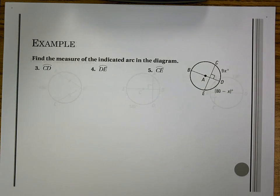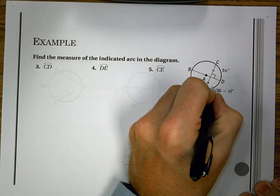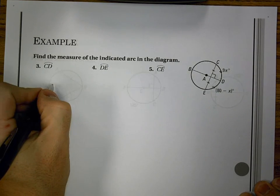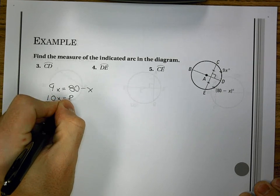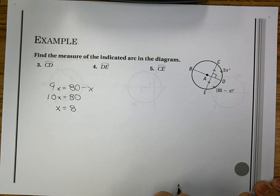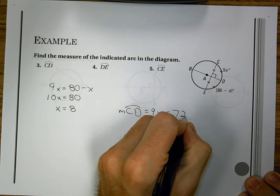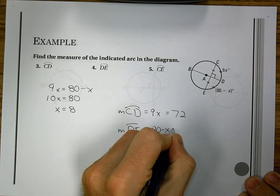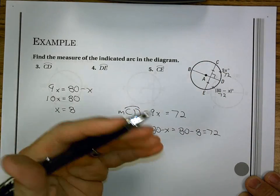Let's look at using that. In our example here, we'll find the measure of the indicated arcs. This is a diameter, and it means it bisects that chord and it bisects these arcs. Now since those arcs are equal, I'm going to say that 9x equals 80 minus x, which gives me 10x equals 80, or x equals 8. So I can now plug that in, and I get that the measure of arc CD, which was 9x, is 72, and the measure of arc DE, which was 80 minus x, is 80 minus 8, or 72. So these are both the same. They should be because we did say they're bisected.